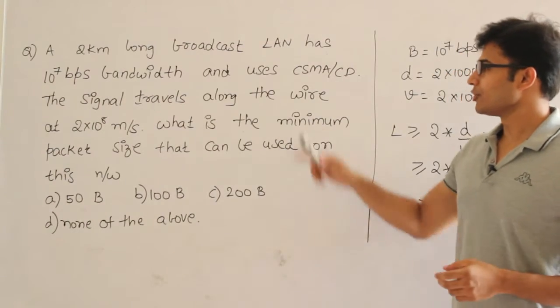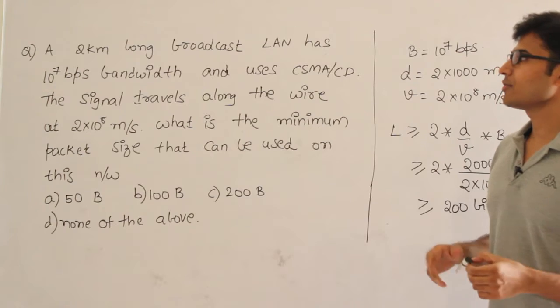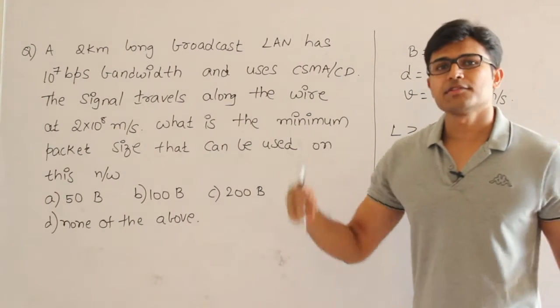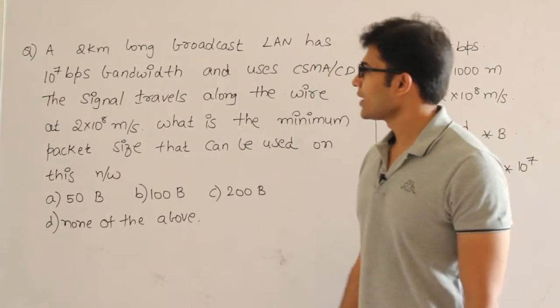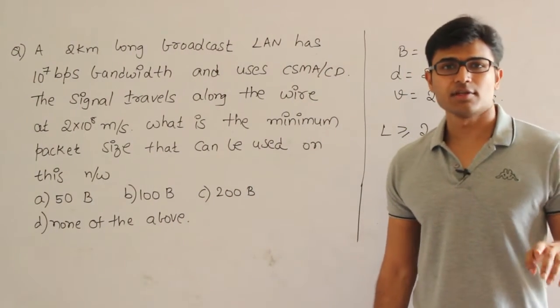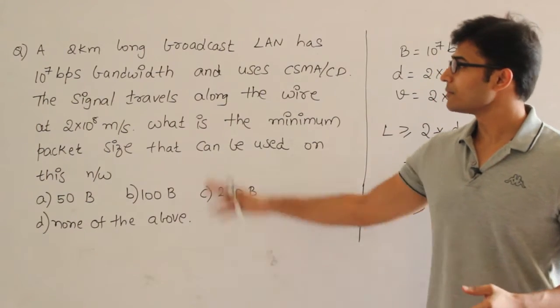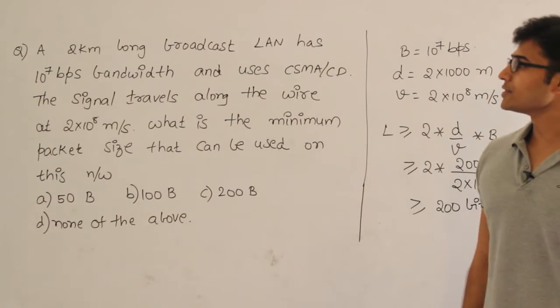Now let's look at this question. A 2 kilometer long broadcast LAN has 10^7 bits per second bandwidth, which means the LAN spans for two kilometers, so the distance is 2 kilometers. The bandwidth is 10^7 bits per second, which means 10 Mbps.